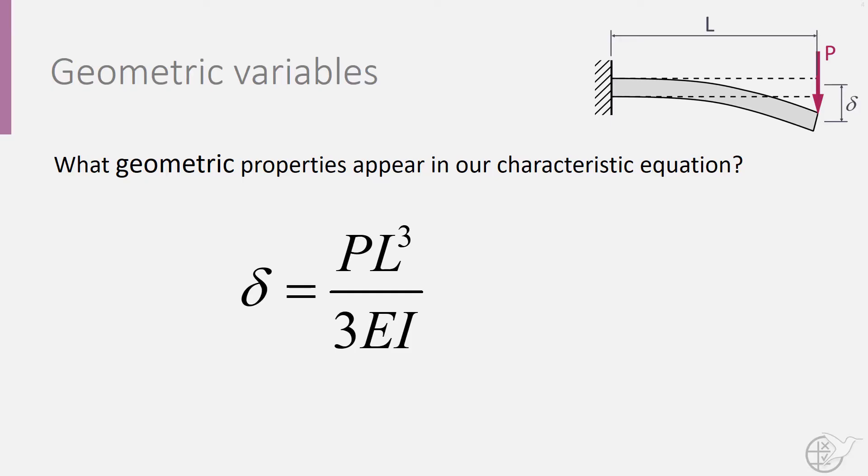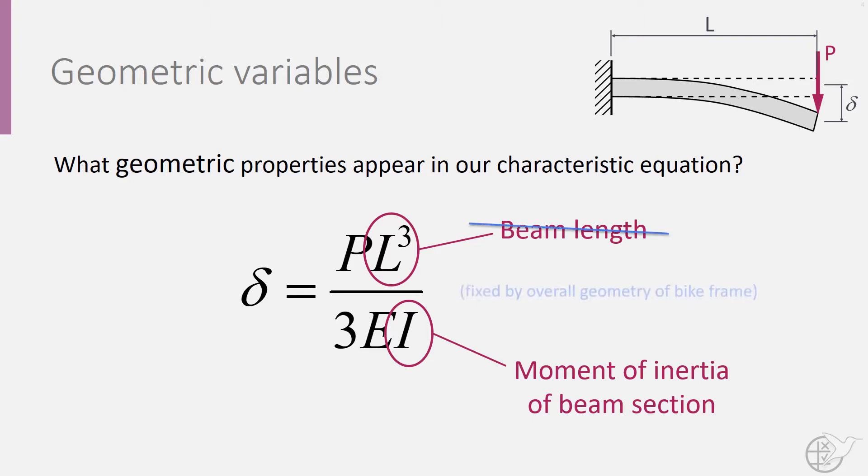If we look closely at this equation, we see two terms related to geometry, the length L, and the term I, which is known as the moment of inertia. We will ignore the length as we will assume that the overall size of the bike frame, and thus lengths of the individual rods, is fixed. This leaves us with only the moment of inertia I.